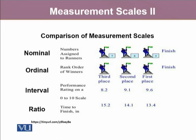The third one is interval. When we measure a variable on a performance rating, it could be 8.2, 9.1, or 9.6. The intervals represent differences between these values — 9.1, 9.6, and 8.2. If a person is rated at 9.6, it means that person has a higher score compared to 9.1 and 8.2.